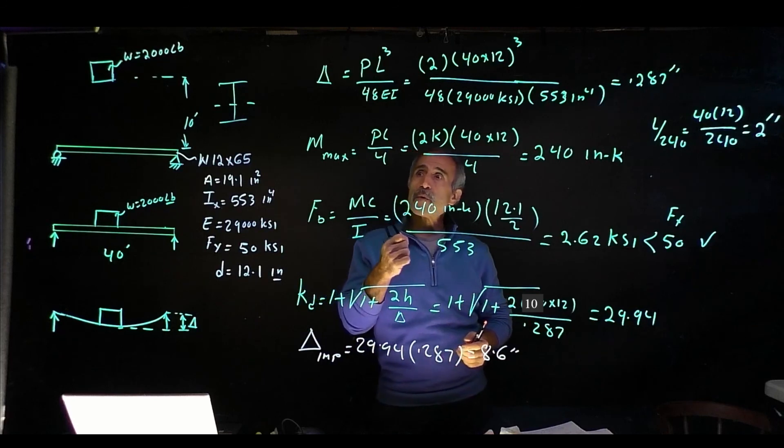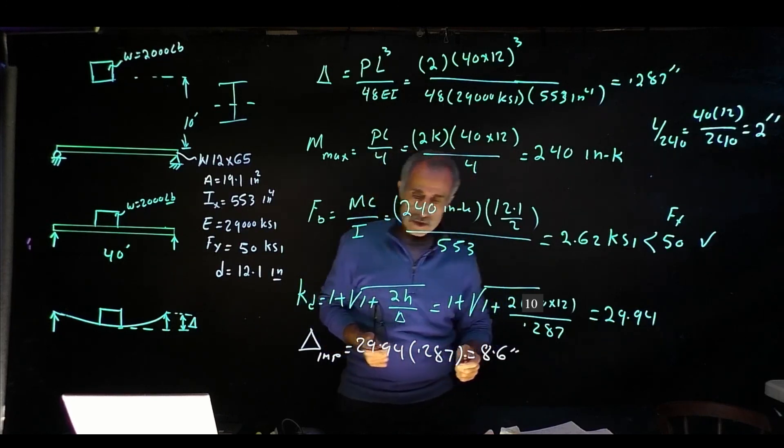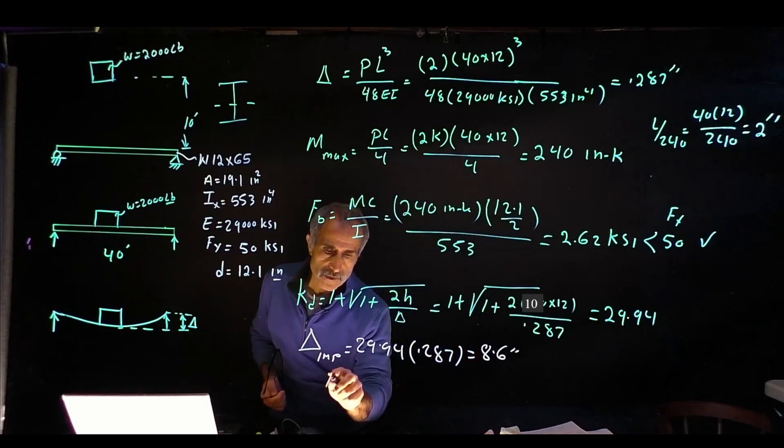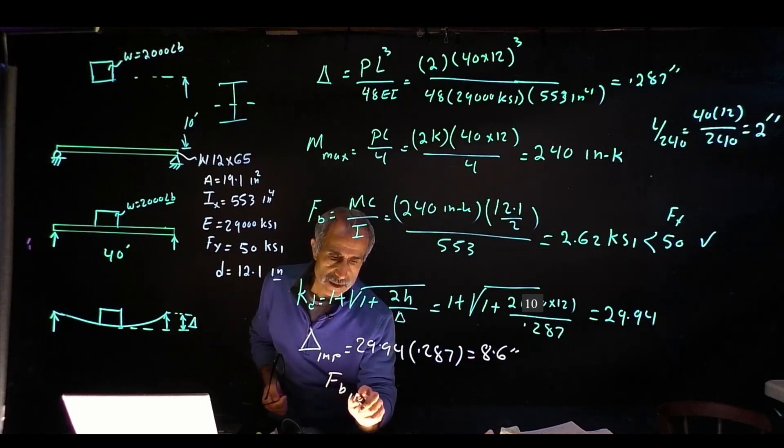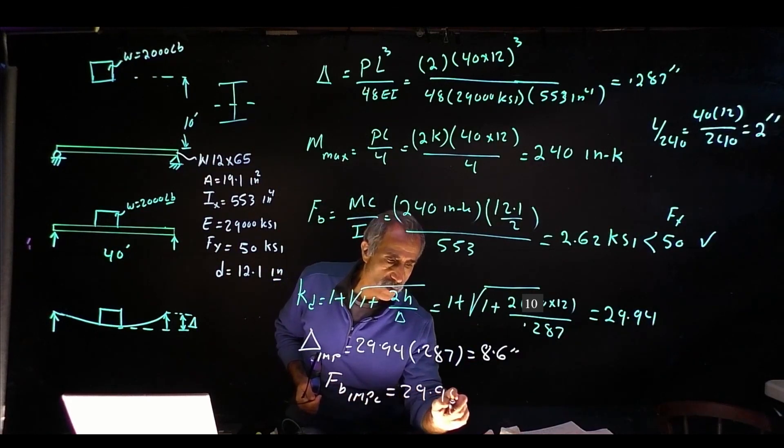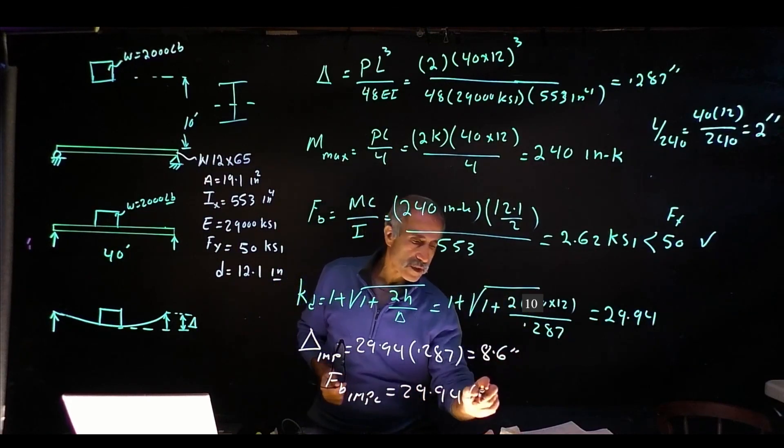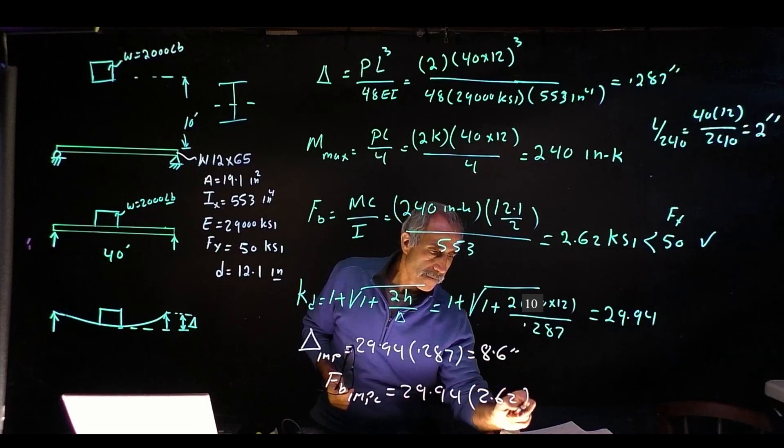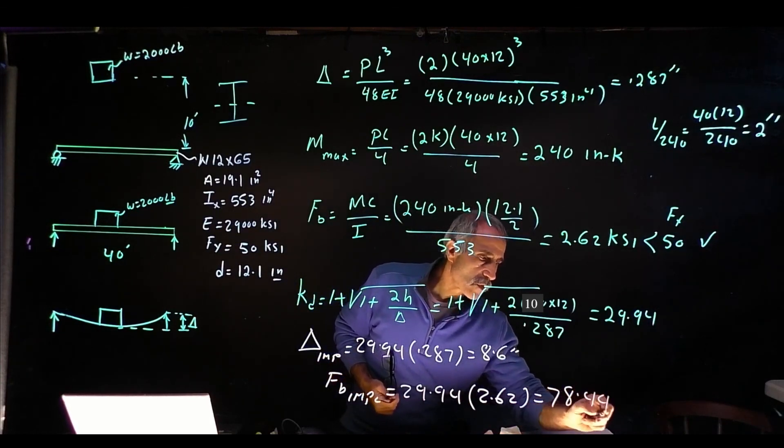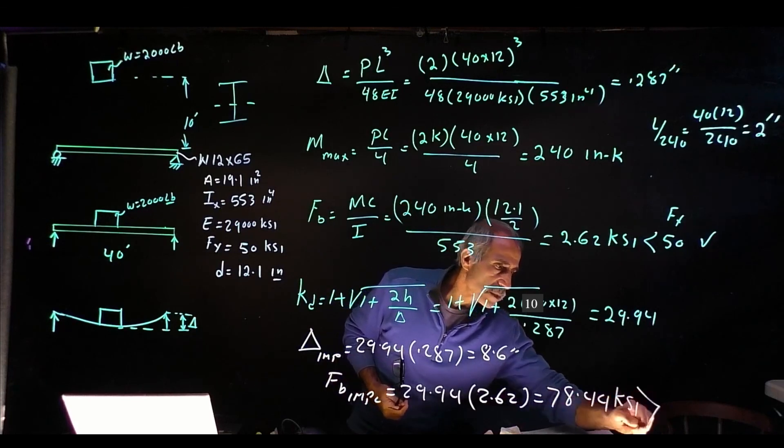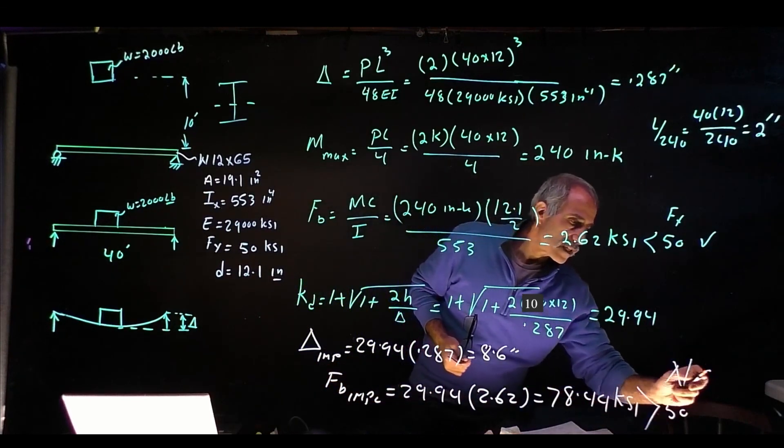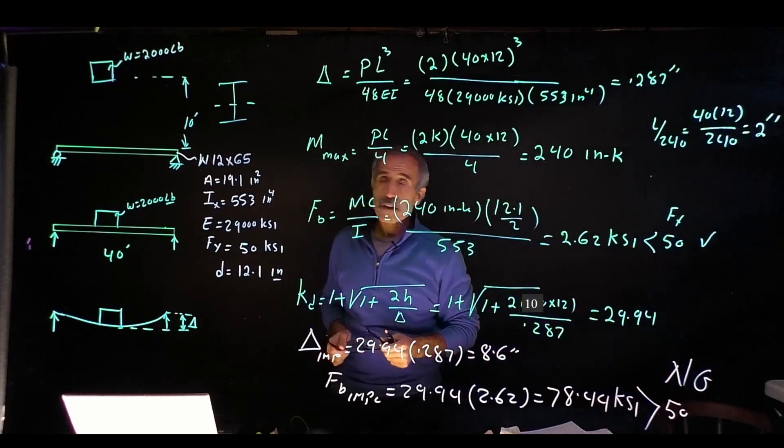So let's find out what our stress is going to come out. The stress after impact, FB of impact, is going to be 29.94 times 2.62, and that's equal to 78.44 ksi, which is bigger than 50, and it's going to fail the beam.